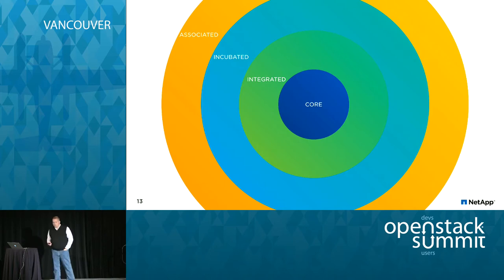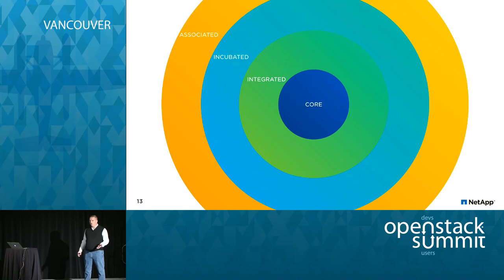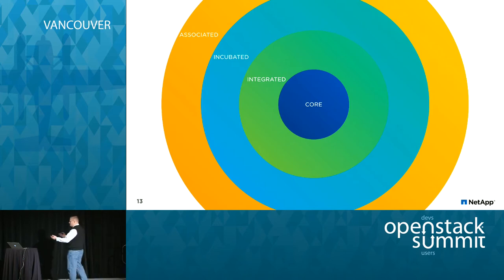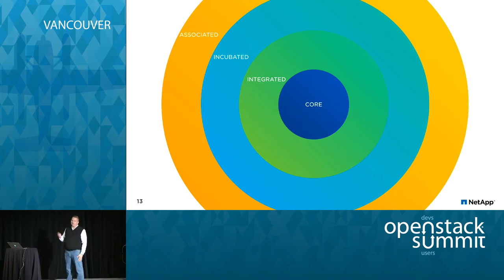To answer where Manila is at: it's ready for some use cases now. We're trying to achieve kind of a commercial 1.0 equivalent at the end of the Liberty cycle — appealing to a broader set of capabilities and better rounded out in terms of installation experience, documentation, and ongoing care and feeding. Look for it in distributions in the not-too-distant future.